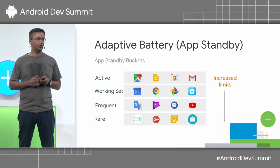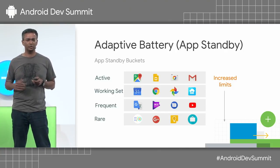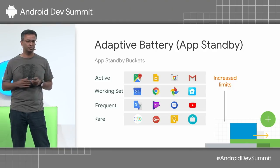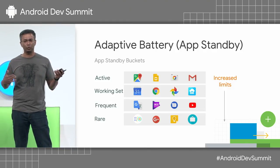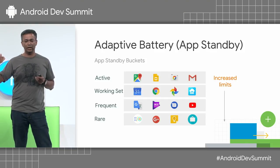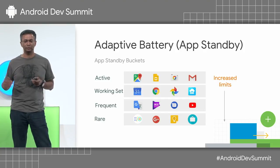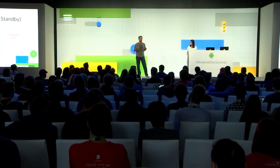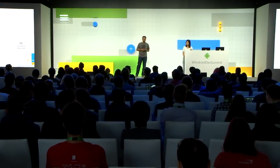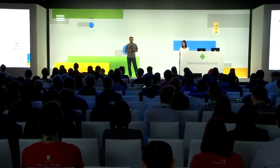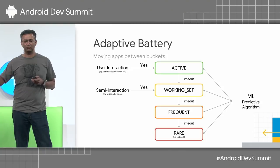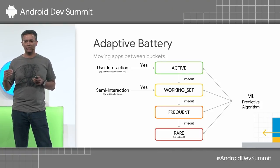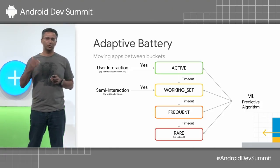Adaptive battery is actually an evolution of app standby that was introduced back in Marshmallow along with Doze. What app standby did was put apps into two possible states — active or inactive — based on usage. Adaptive battery extends this into four buckets, where active is the least restrictive and rare is the most restrictive. For instance, if you were at Google I/O and you installed the I/O app, by now it should have gone to the rare bucket because you haven't been using it. Once you launch the app, or any kind of strong interaction like clicking on a notification from the app, the app goes into the active bucket.